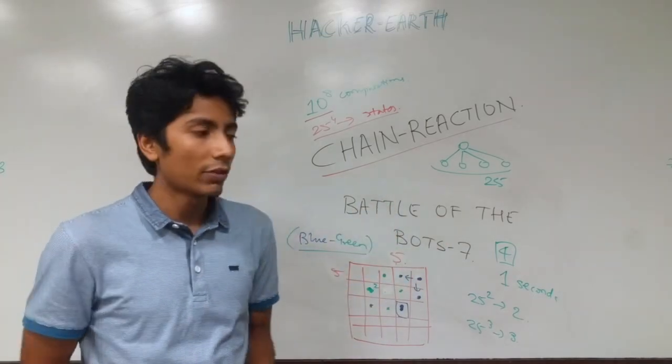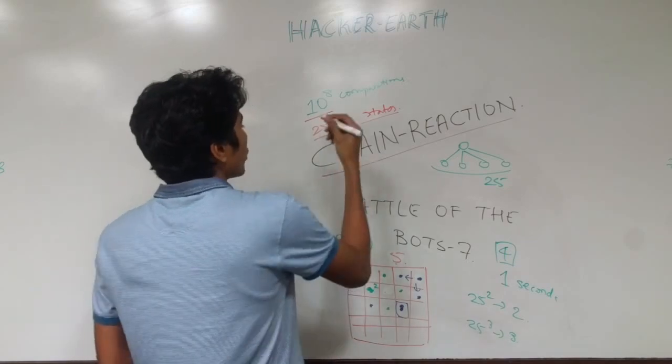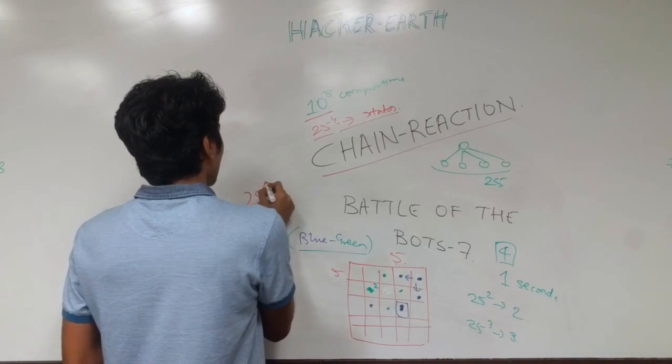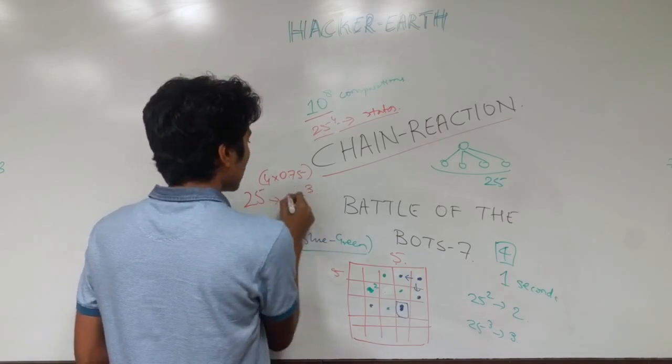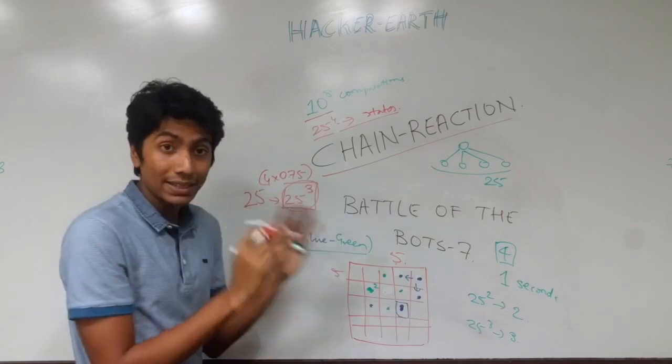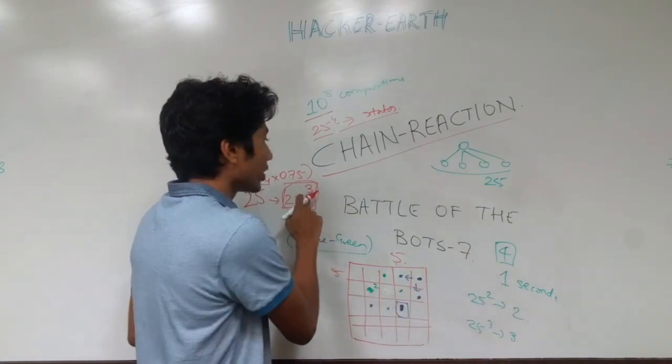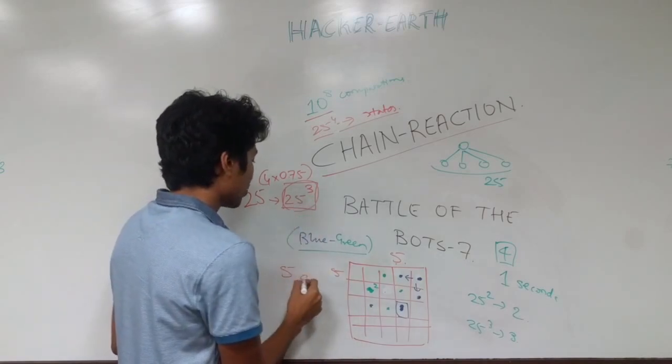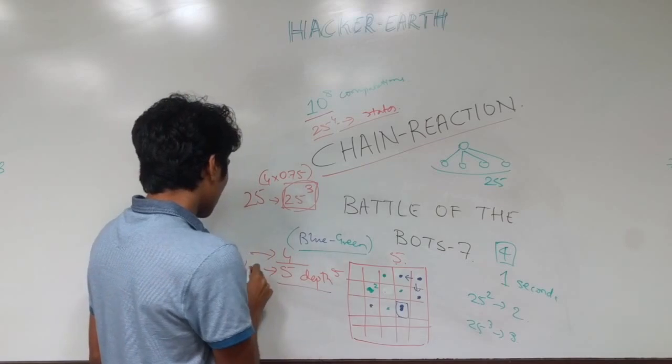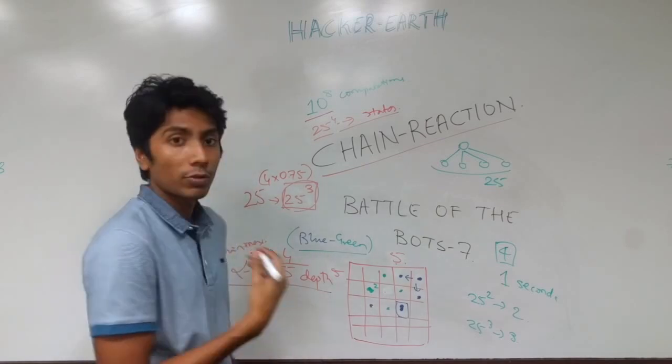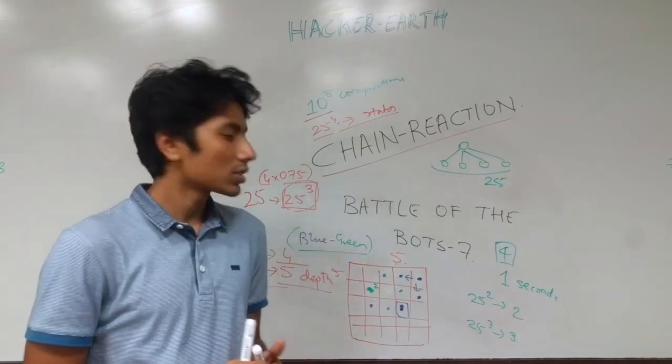So what I used was alpha beta pruning. And that typically gives you a 25% saving. So if I was searching these many states, 25% saving per branch, that means 25 to the power 4 times 0.75 per branch. So that becomes 25 to the power 3. And now I'm searching only these many states. So that's a big saving. Now, of course, I'm not going to be searching only these many states. I'm still going to be searching as many states as I can. What's effectively going to happen is that the depth is going to increase. So I'll be probably searching at a depth of 5. So you see, plain Minimax is giving me 4, alpha beta is giving me a depth of 5. This is what happened actually in the contest. And my program was performing okay. It was quite good. It was coming in the top, I think, 20 programs. So alpha beta was quite useful.